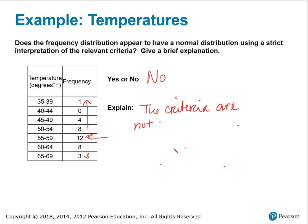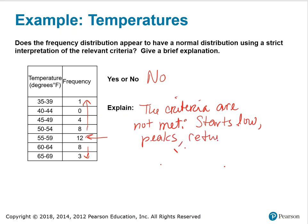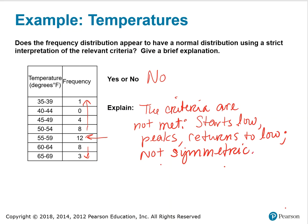Remember, the criteria are: starts low, peaks, and then returns to low. So, not symmetric — that would be your explanation.